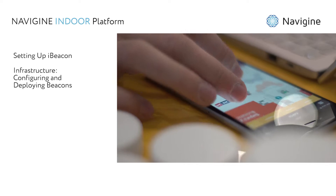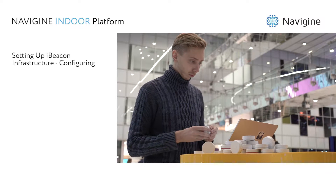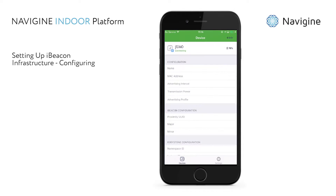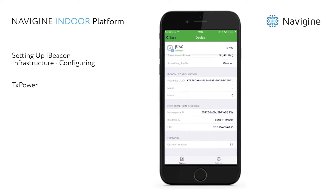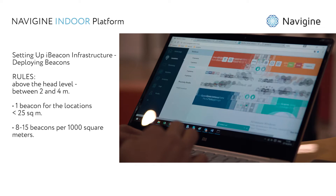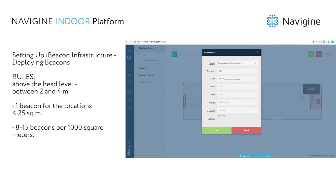The second step is to set up the beacon infrastructure. Use the beacon vendor application to configure beacons and set up the following parameters: TX power, advertising interval. After you've configured the beacons, start to deploy them. Follow the rule of thumb: install them above head level, at a height between 2 and 4 meters.